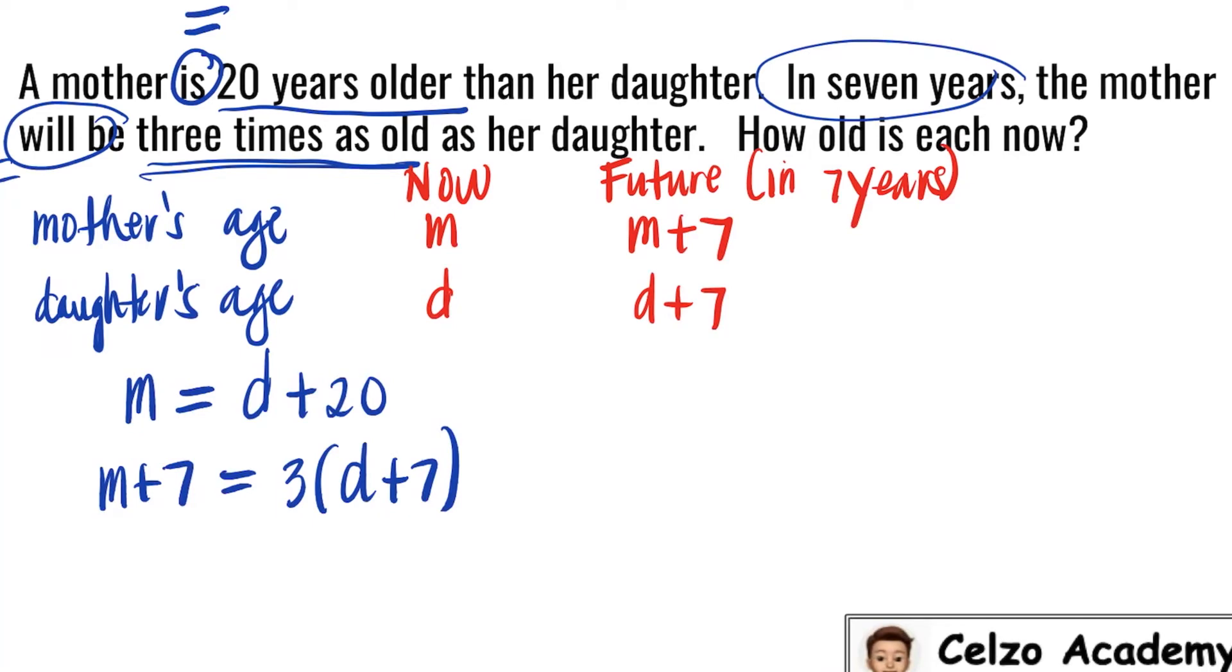Solving this system of equations, we can substitute D plus 20 into the M in our second equation. So now we have D plus 20 plus 7 is equal to, I will distribute the 3 to the parentheses, so we have 3D plus 21. Simplifying the left side, we have D plus 27 is equal to 3D plus 21.